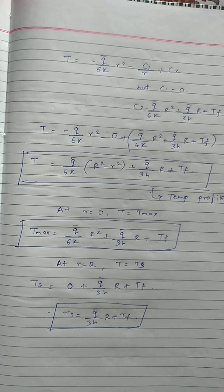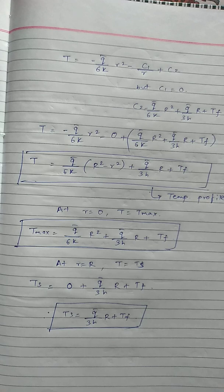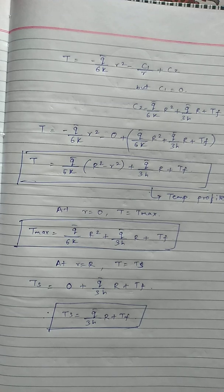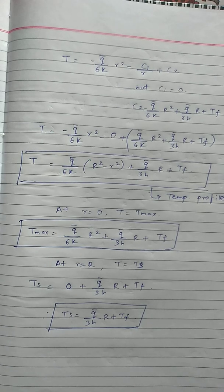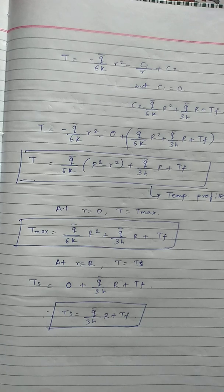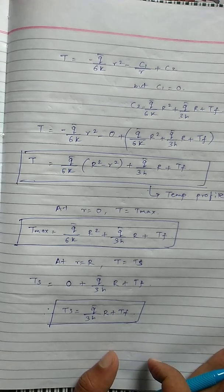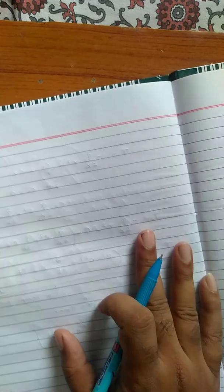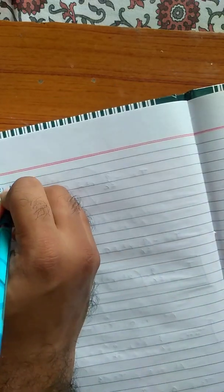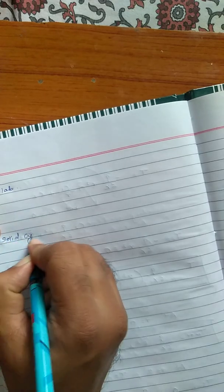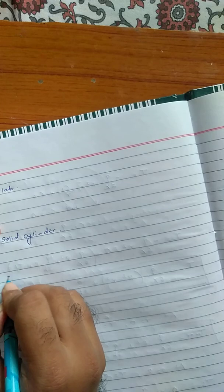The strategy for finding the temperature profile and slope is the same for all three geometries: infinite slab, solid cylinder, and solid sphere, with the same boundary conditions applied. The only difference is that for a slab we use dT/dx, while for a sphere and cylinder we use dT/dr.